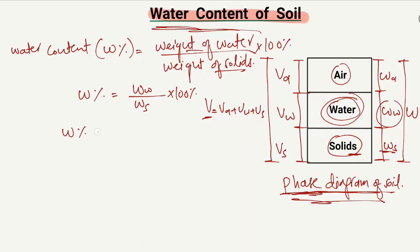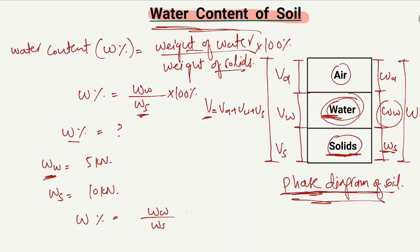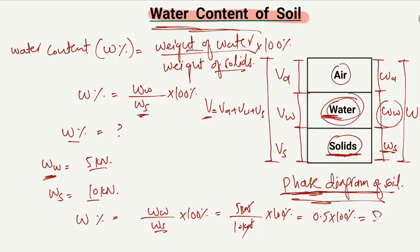For example, how can we find the water content of a soil sample? If the weight of water in a soil sample is 5 kilo-Newtons and the weight of the solids is 10 kilo-Newtons, then water content equals 5 kN divided by 10 kN, multiplied by 100%. Dividing 5 by 10 gives 0.5, and the units cancel, so 0.5 multiplied by 100% gives 50%.